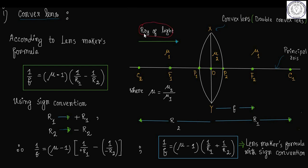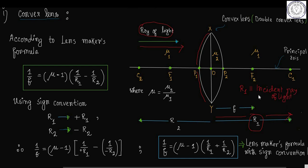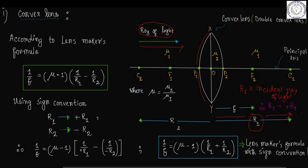The ray of light travels towards the right and is incident on the first refracting surface. The radius of curvature R1 of the first refracting surface XP1Y is measured in the same direction as the incident ray of light. That is why, using sign convention, R1 tends to plus R1, or positive R1.